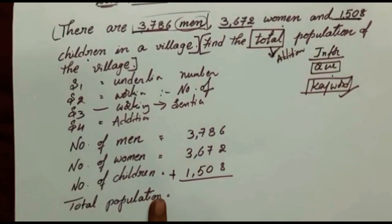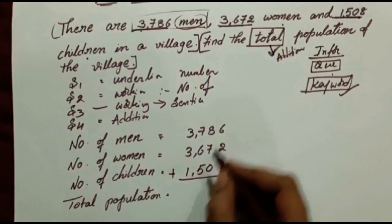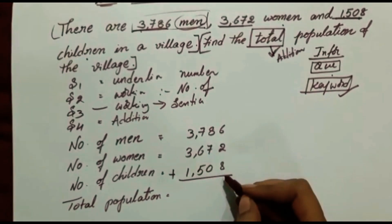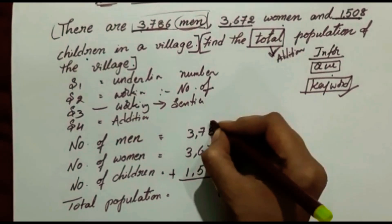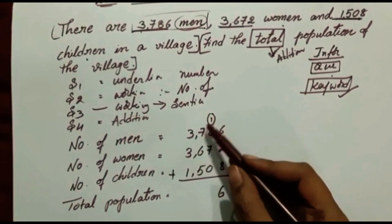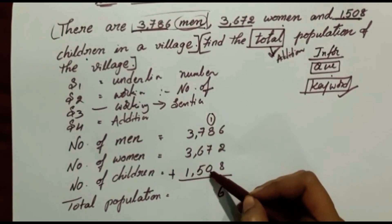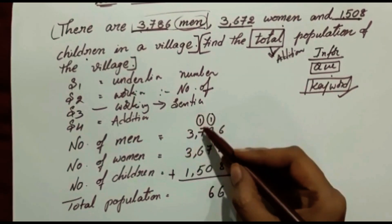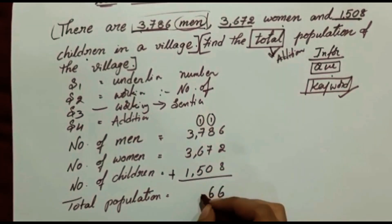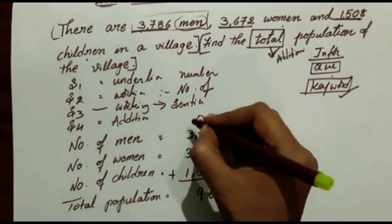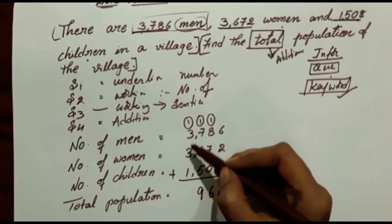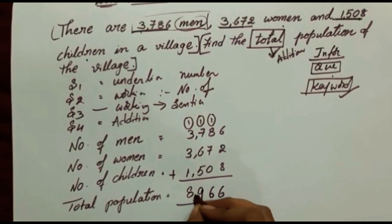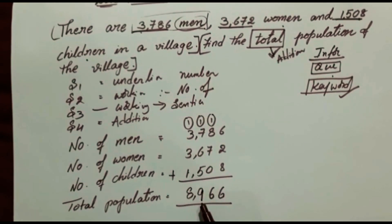Now we find the total population by adding. 6 plus 2 plus 8 is 16, carry 1. 1 plus 8 plus 7 plus ... 6 plus 5 plus 5 plus 5 is 19, carry 1. 1 plus 3 plus 5 plus 1 is 8.